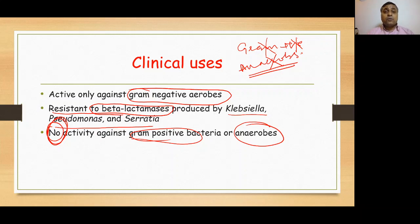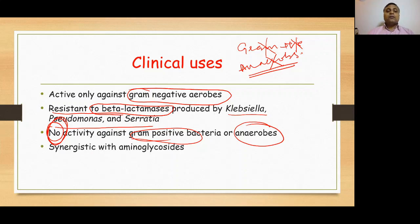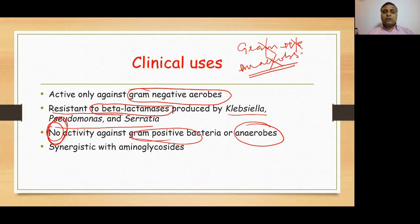An important MCQ or university question: if a patient is infected by gram-negative bacteria that are sensitive to penicillin but we cannot use penicillin because of hypersensitivity, in those patients we can use aztreonam as an alternative drug. Also, because both aztreonam and aminoglycosides are bactericidal, they will have a synergistic effect when used together.